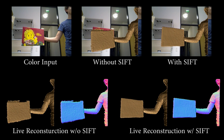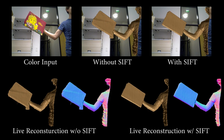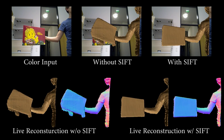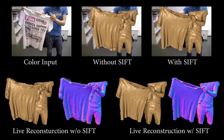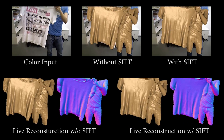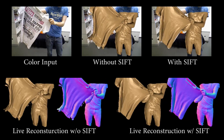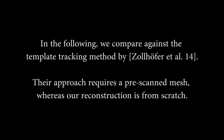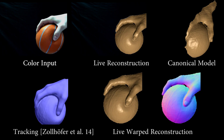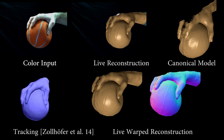Our sparse SIFT feature term enables robust tracking of planar objects which have only few geometric features. Depth-only tracking approaches fail in such scenarios, especially for fast motions. In contrast to the method of Zollhofer et al., we do not require a pre-scan template model but perform the reconstruction from scratch.